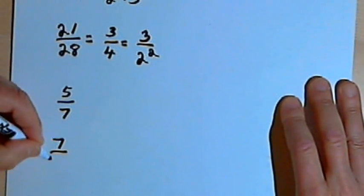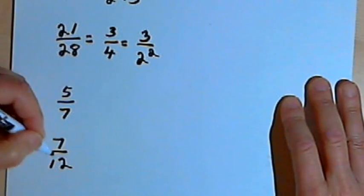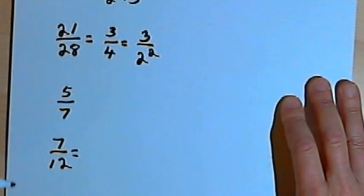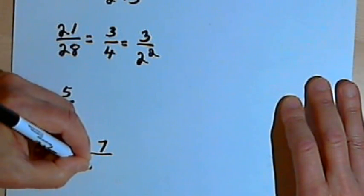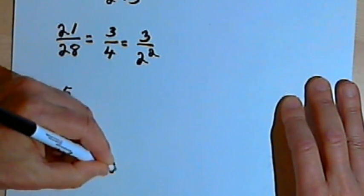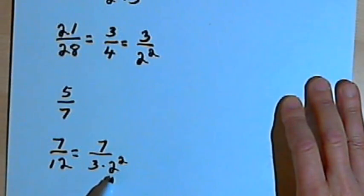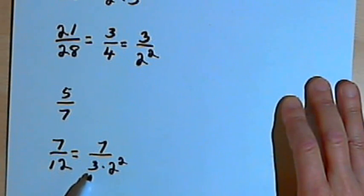If I have 7 over 12, it's reduced. I'm going to have to factor the denominator. 12 is 3 times 4, and 4 is 2 squared. Well, I've got 2 squared in the denominator, but I've also got a 3, which means this is going to be a repeating decimal.